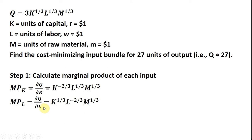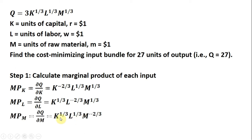The marginal product of labor: finding the L term and bringing down the one-third in front, we take L to the one-third and subtract one, leaving us L raised to the minus two-thirds power. Likewise, the marginal product of raw materials gives a similar-looking equation, except now we get M raised to the minus two-thirds power.